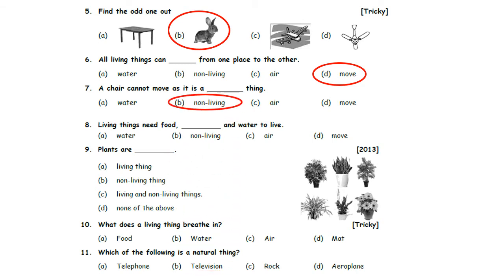Living things need food, _____ and water to live. Option A: Water. Option B: Non-living. Option C: Air. Option D: Move. We know living things need food, air, and water to live. So, Option C, Air, is the correct answer.